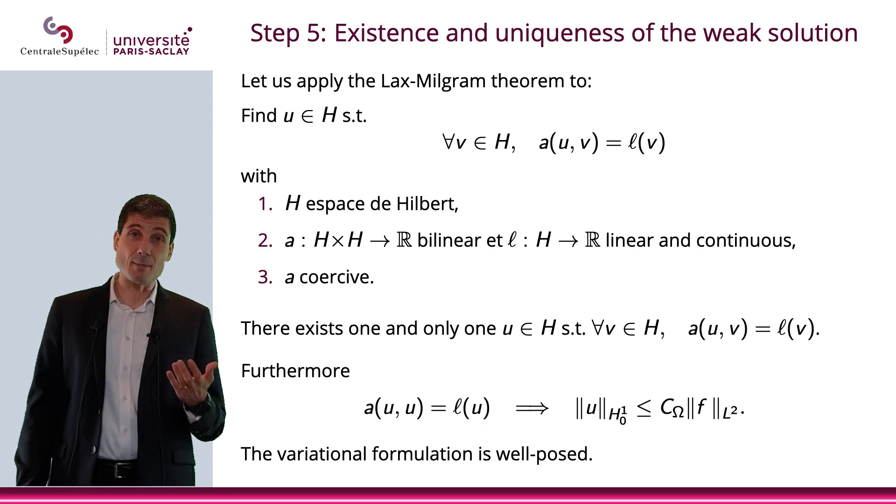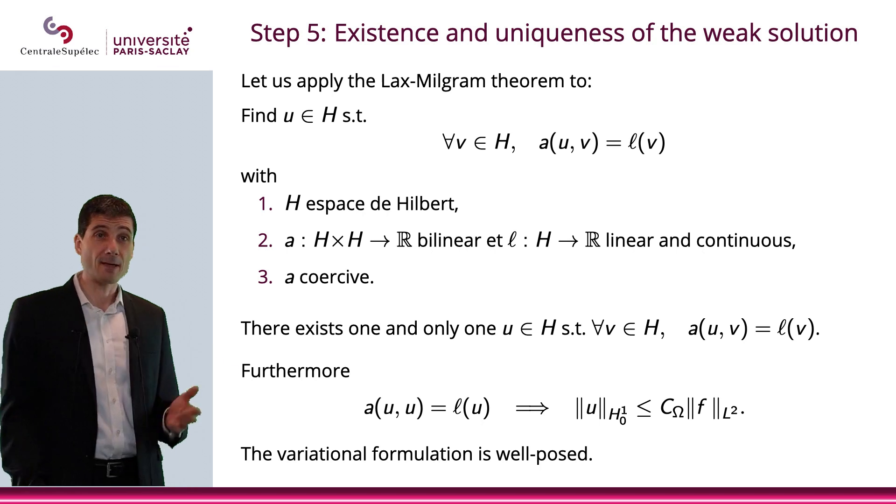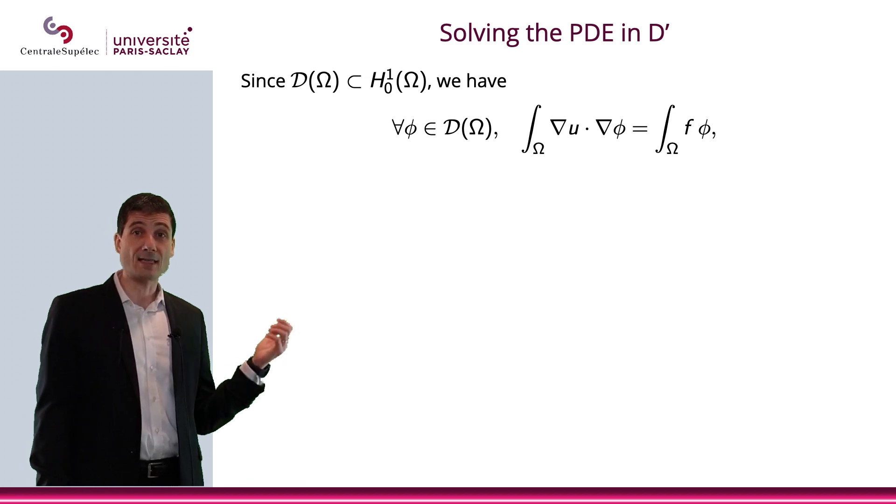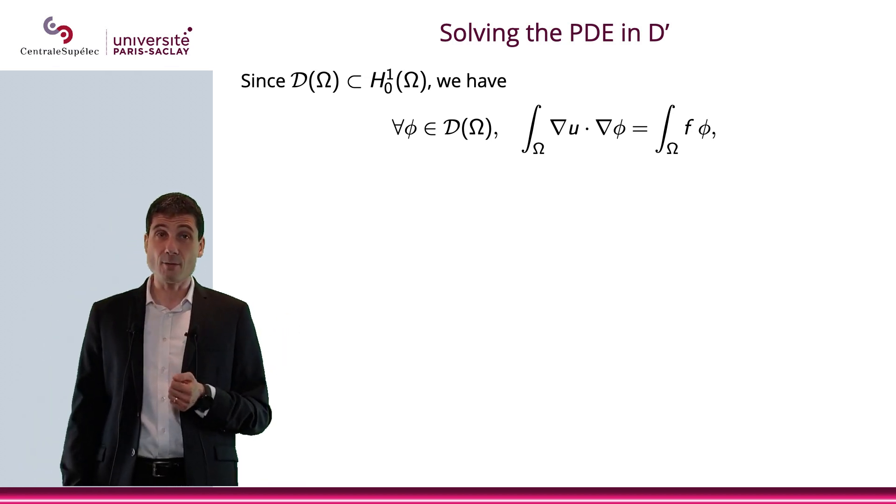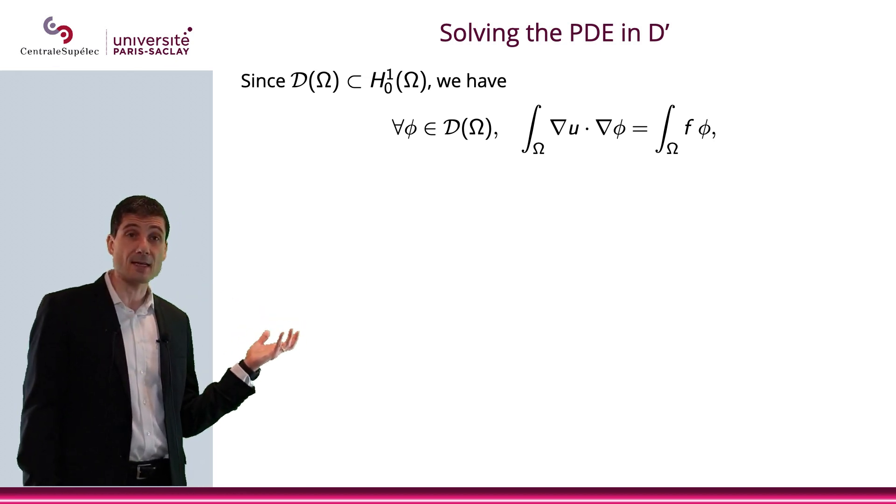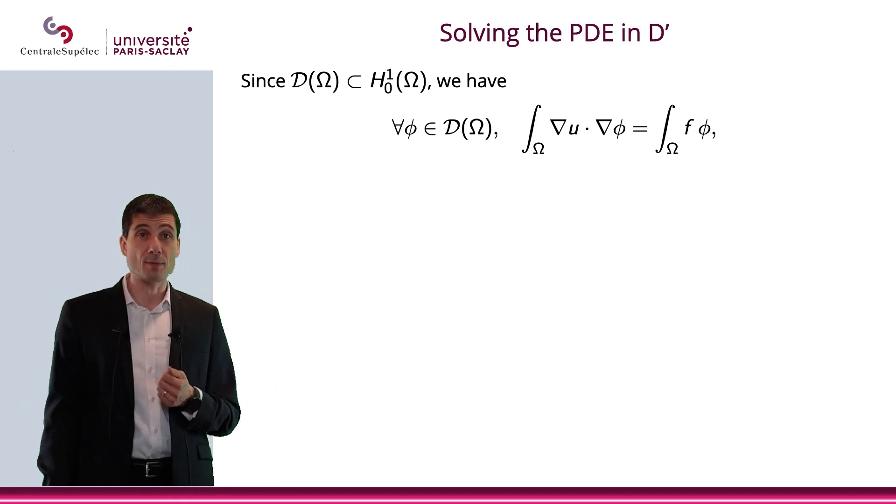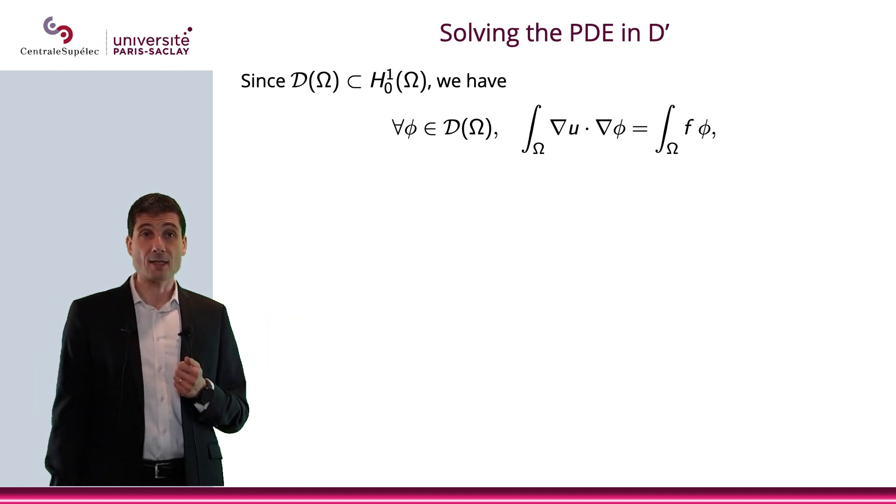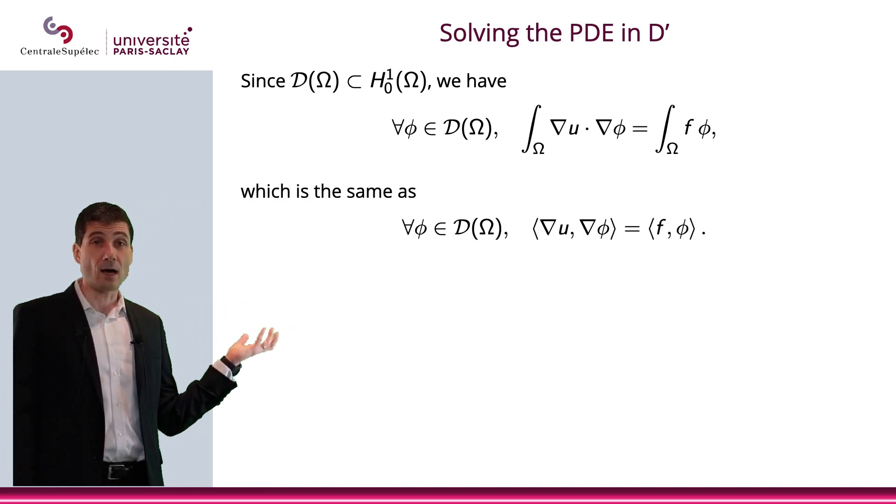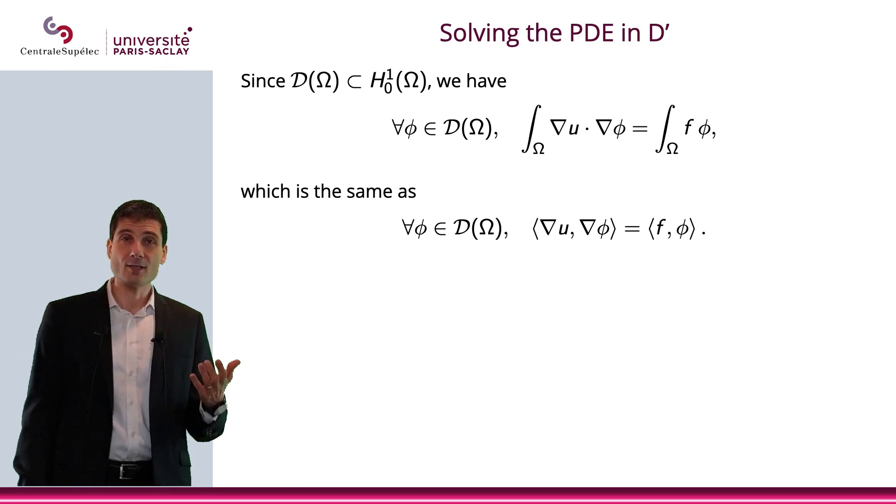I have that a(u,u) implies the norm of u in H^1_0 is bounded by the norm of f in L^2 multiplied by a constant, which means the variational problem is well-posed. Now, let's do step 6, which is solving the PDE in D'. We have the variational form and we know this variational form has a unique solution in H^1_0. Since it's true for all v in H^1_0, it must be true for a subset like D, the test functions.